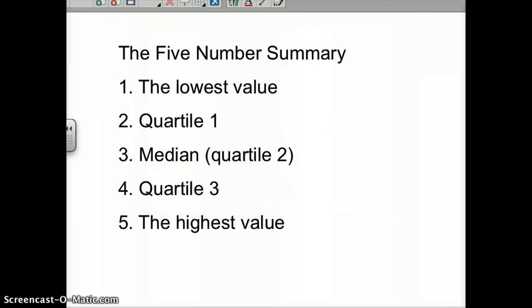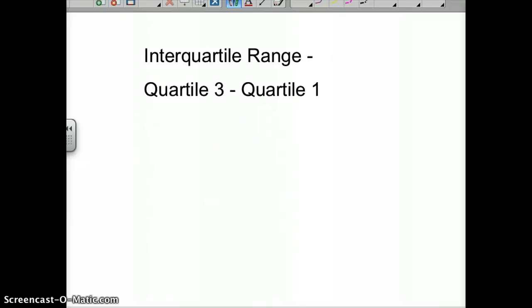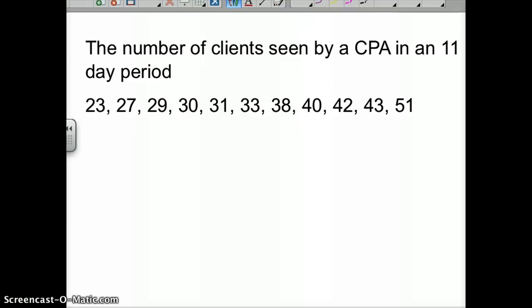The five-number summary is basically, if you have a set of data, it's your lowest value, your first quartile Q1, your second quartile which is the median, your third quartile Q3, and the highest value. That's the five-number summary in this EDA. Another thing you'll need to know is interquartile range, which is simply your third quartile minus your first quartile.